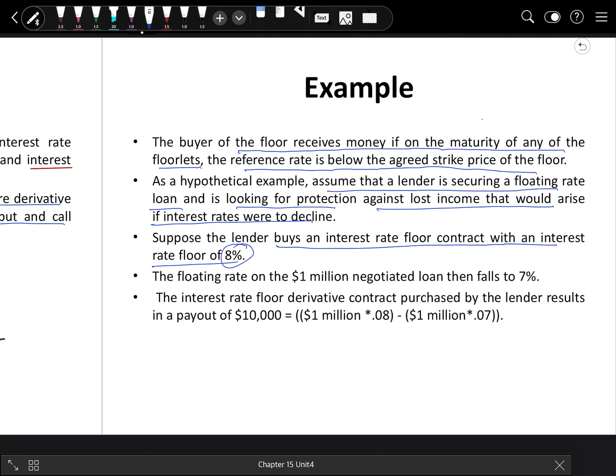If it is reduced below 8%, the bank will compensate the lender. The floating rate on the $1 million negotiated loan then actually falls to 7%, meaning the reference rate has declined. The interest rate floor derivative contract purchased by the lender results in a payout of $10,000 by the bank to the lender. I hope this example is clear.